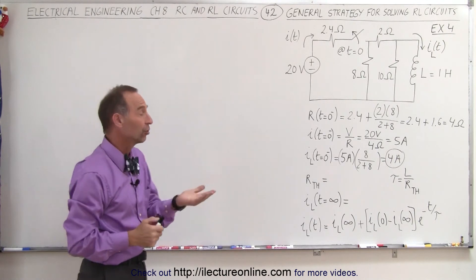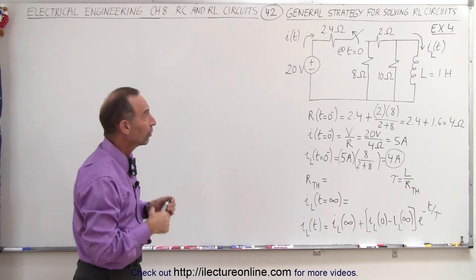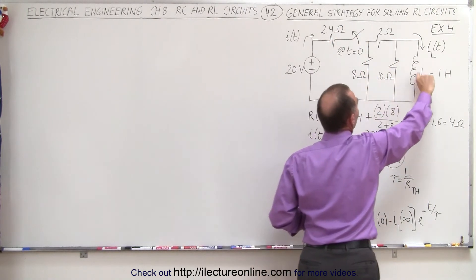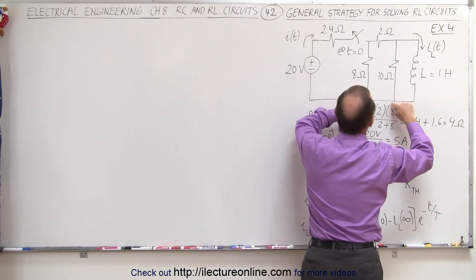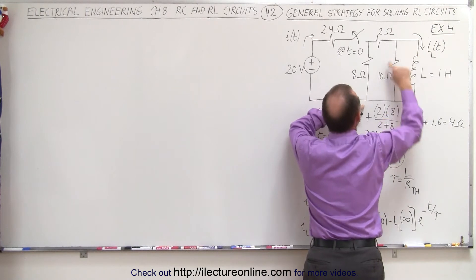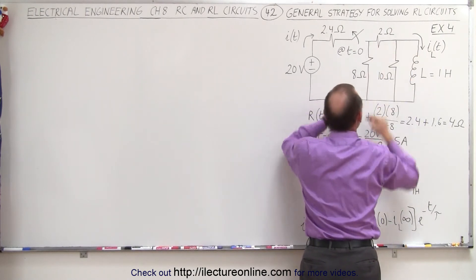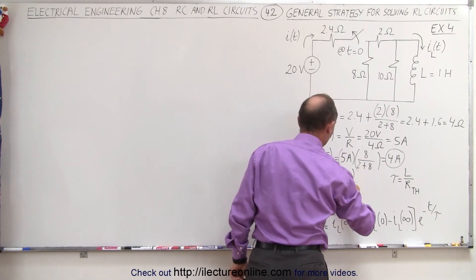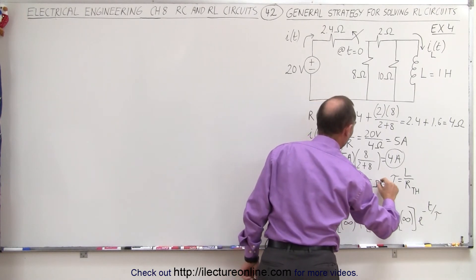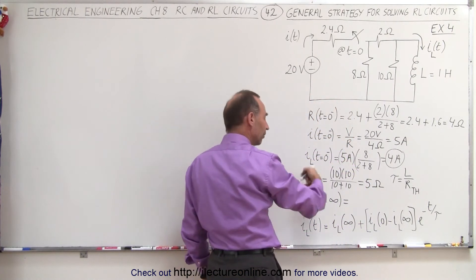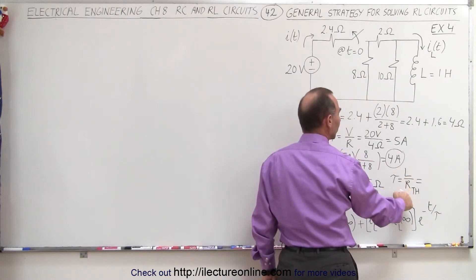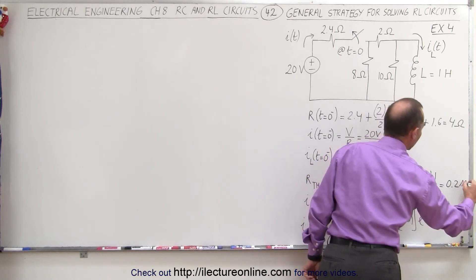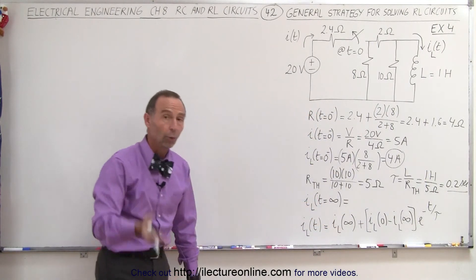Now we need to find the equivalent Thevenin resistance after the switch opens to find the time constant. Once the switch opens, from the inductor the current splits between two branches: 10 ohms through one branch, and 8 plus 2 = 10 ohms through the other. The equivalent resistance is (10 times 10) divided by (10 plus 10) = 100/20 = 5 ohms. The time constant is inductance divided by resistance: 1 henry divided by 5 ohms = 0.2 seconds.